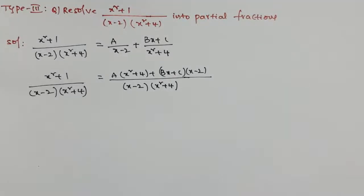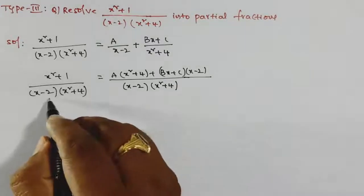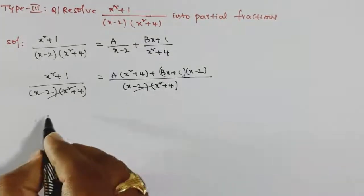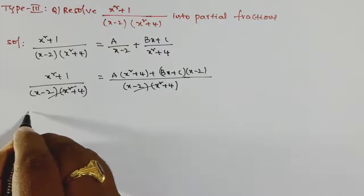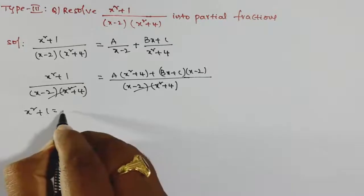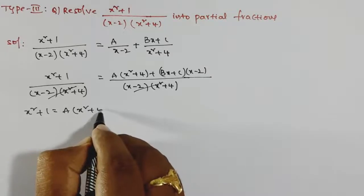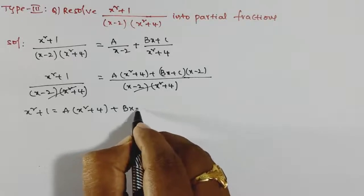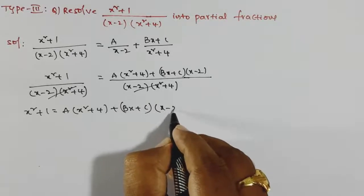In both fractions the two denominators are the same, so we cancel them. The remaining equation is: x² + 1 = A·(x² + 4) + (Bx + C)·(x − 2).